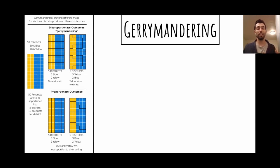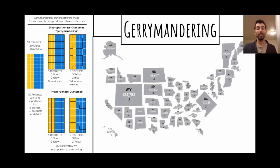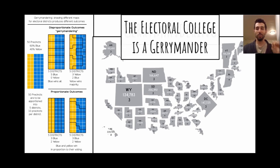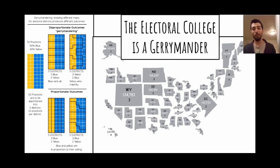One form of voter suppression many of you have heard of is gerrymandering. Through the two techniques of packing and cracking, you can actually give a minority of voters a landslide victory. If you look at these strategies applied to the Electoral College — states represented as physically smaller, like California and New York, are examples of packing those populations, while states represented as physically larger, like Wyoming and North Dakota, are cracked so their votes have more weight. The Electoral College itself is a gerrymander and was designed that way to benefit people who believed in buying and selling other people.